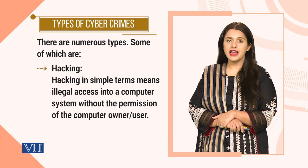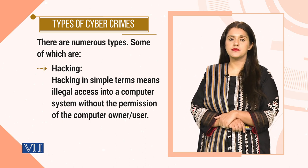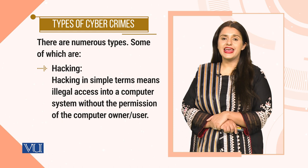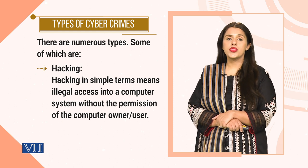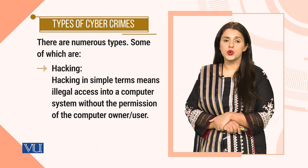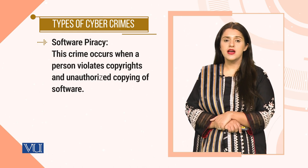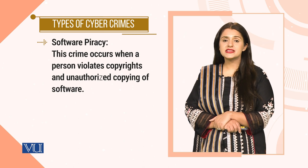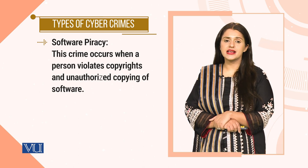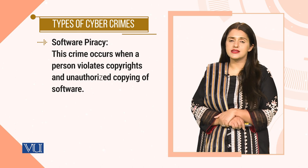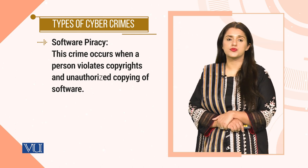After looking at the categories of cybercrime, let's look at the types of cybercrime. Cybercrime can be in the form of hacking — in simple terms, illegal access into a computer system without the permission of the computer owner. The second type can be software piracy. This crime occurs when a person violates copyrights and does an unauthorized use of software or someone's intellectual property.